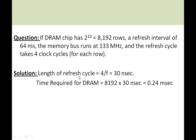Here is a question from Wikipedia: if a DRAM chip has 2^13 rows (8192 rows), a refresh interval of 64 milliseconds, and the memory bus runs at 133 MHz, and the refresh cycle takes 4 clock cycles per row — the length of the refresh cycle for each row is 4 divided by the bus frequency, which is approximately 30 nanoseconds. The total time required to refresh the entire DRAM is 8192 rows × 30 ns = 0.24 milliseconds.